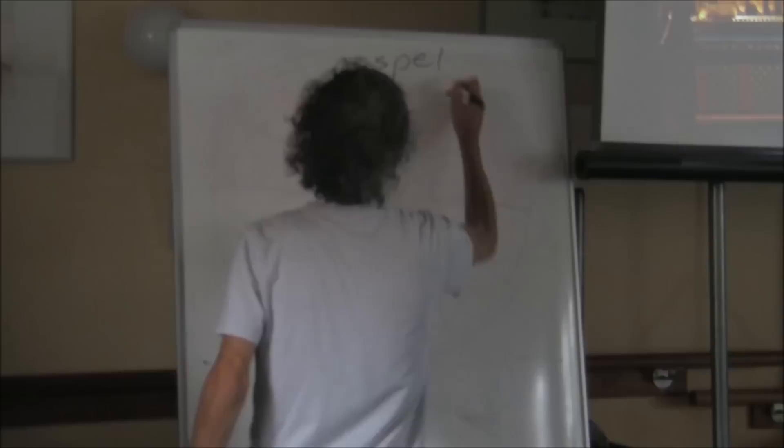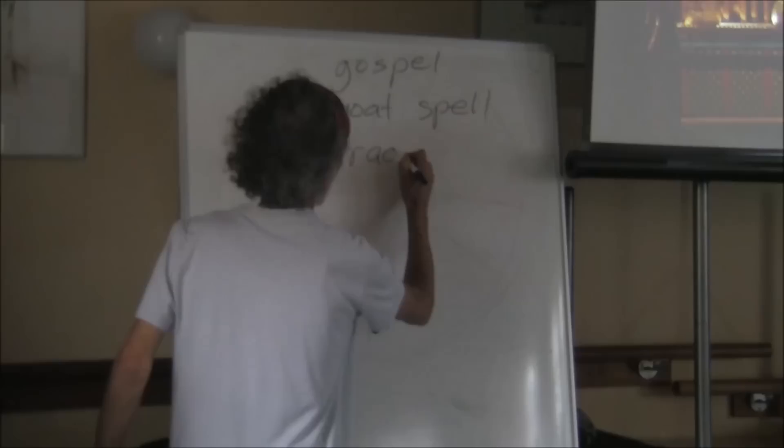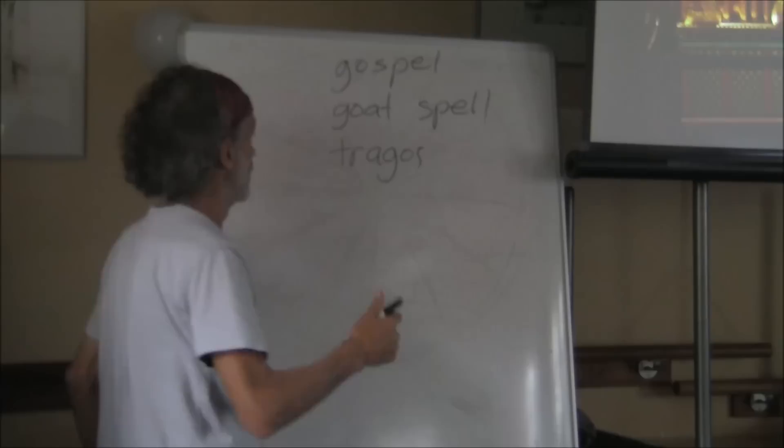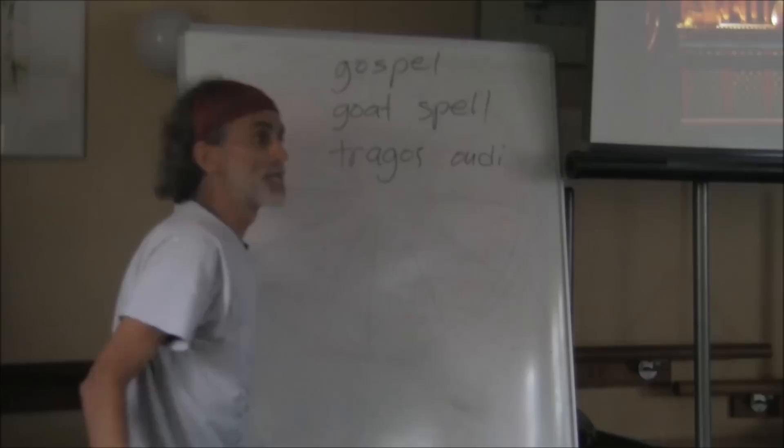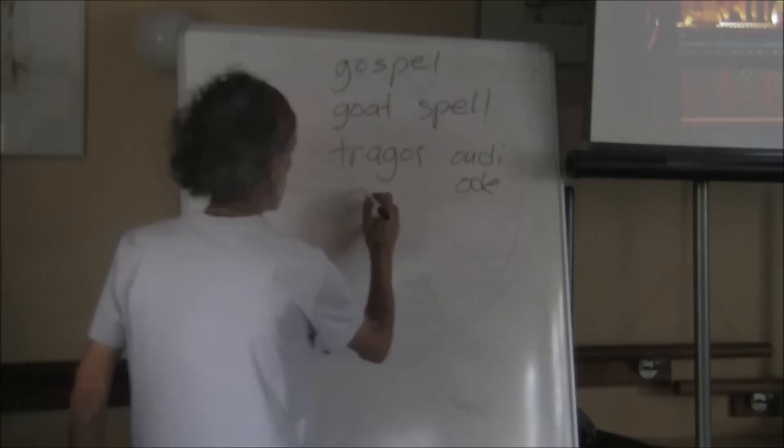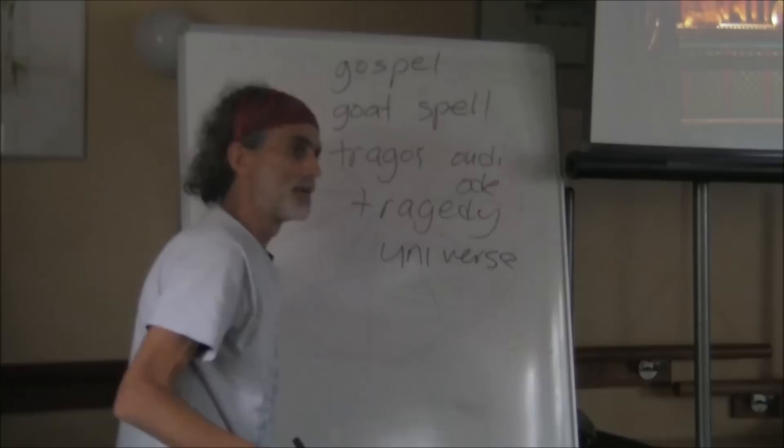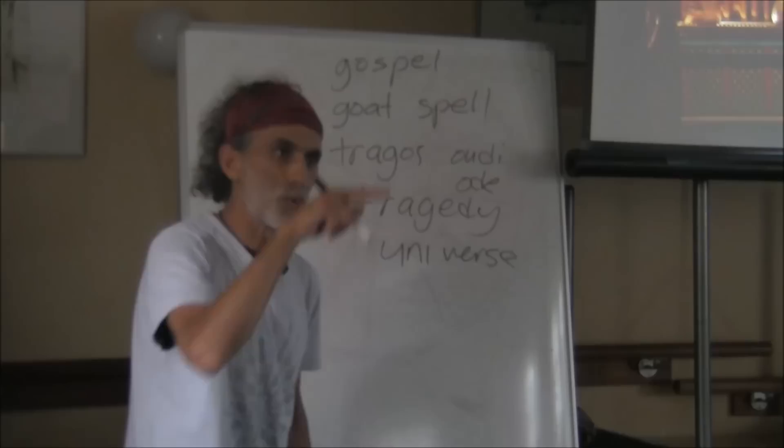Gospel. Goat spell, which comes from any Greeks here today? Dragos odi. Goat. Ode. Goat song. And we get the word tragedy. Dragos, the goat. Ode, song, or universe. One song. It's the wheel. The spell is the wheel.